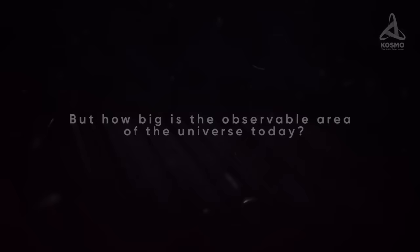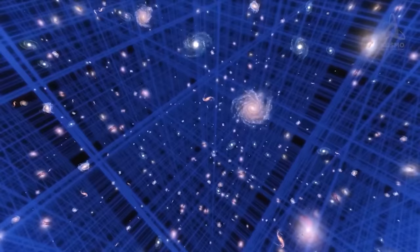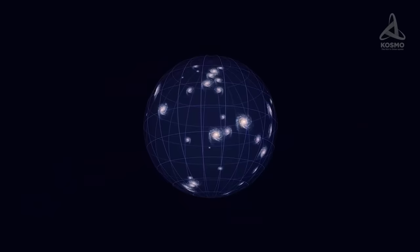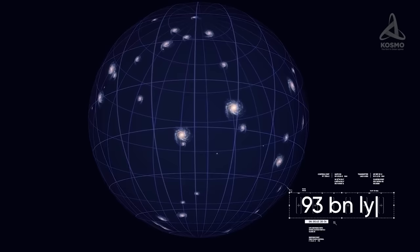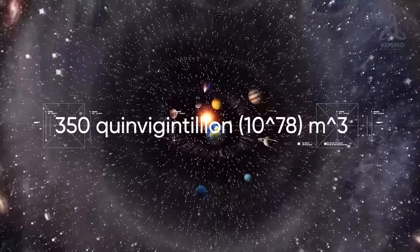The distance to the remotest observable object equals approximately 14 billion parsecs in all directions. Thus, the observable Universe is a sphere with a diameter of about 93 billion light-years, and with the centre inside the solar system. That is, it is centred on the observer. The area equals 350 quenvigintillion cubic meters.